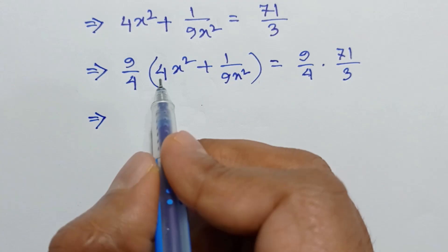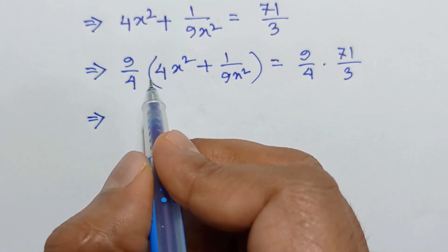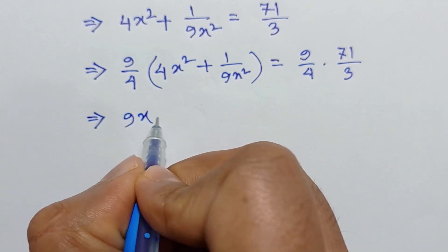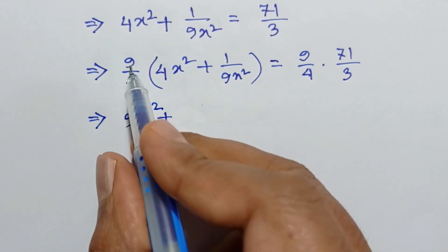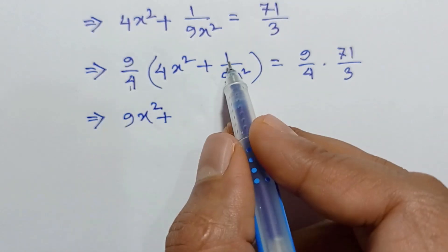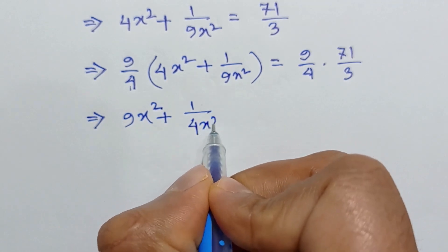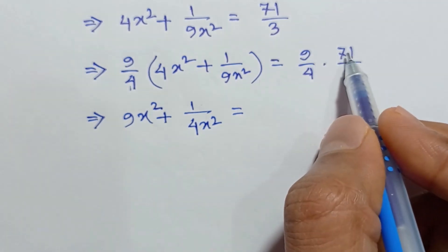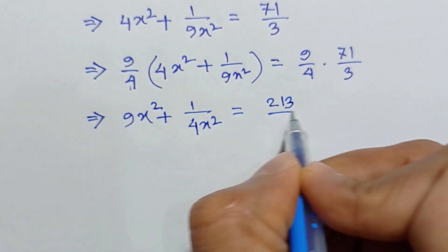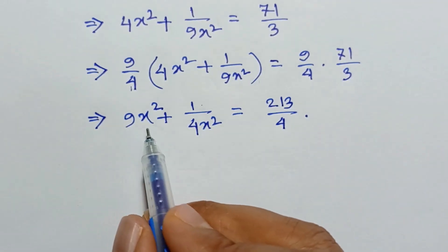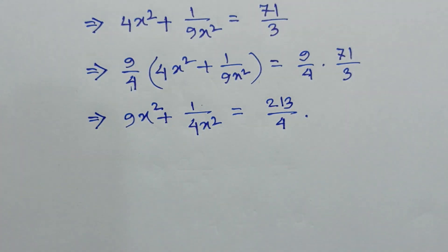On the left side: 9 over 4 times 4x squared — the 4's cancel out — so it remains 9x squared. And 9 over 4 times 1 over 9x squared — the 9's cancel out — so it remains 1 over 4x squared. The right side equals 3 times 71, which is 213 over 4. So the value of 9x squared plus 1 over 4x squared is 213 over 4. If you like this video, please subscribe to my channel.